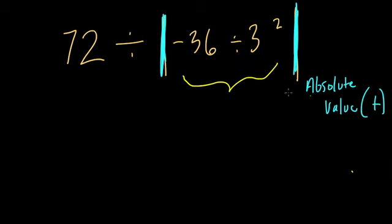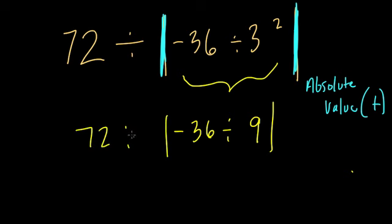First, we have three squared. Exponents come first in PEMDAS. Three squared is three times three, or nine, and we get negative 36 divided by nine. We write the whole thing here, the whole equation.